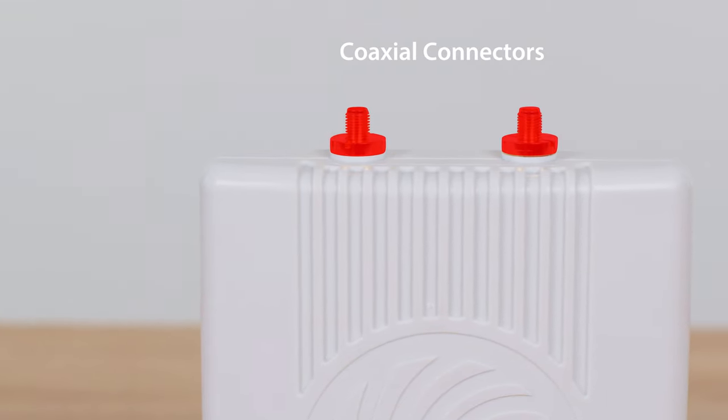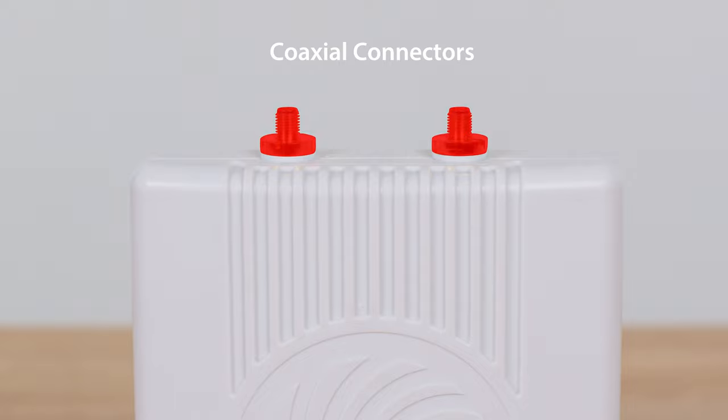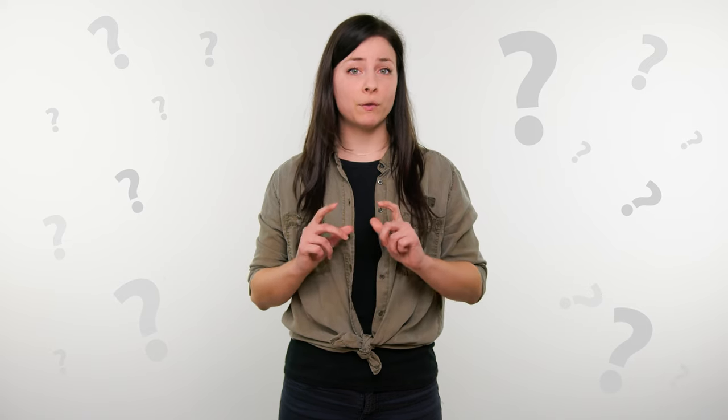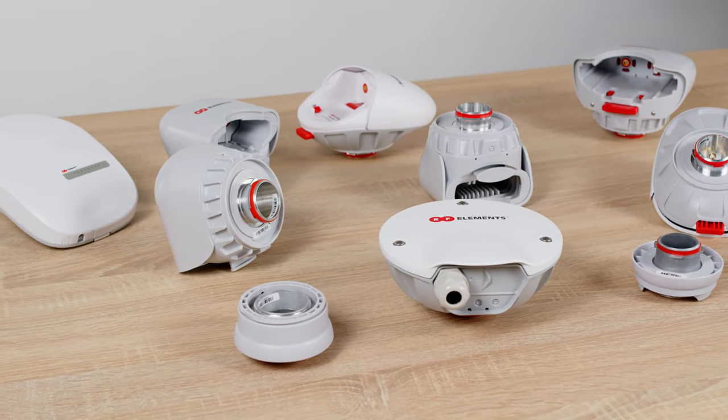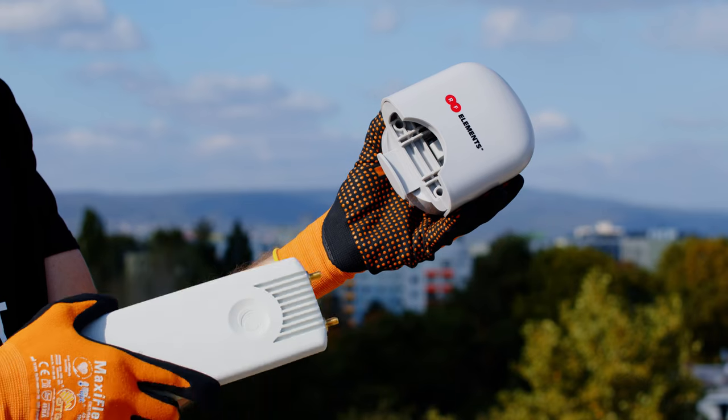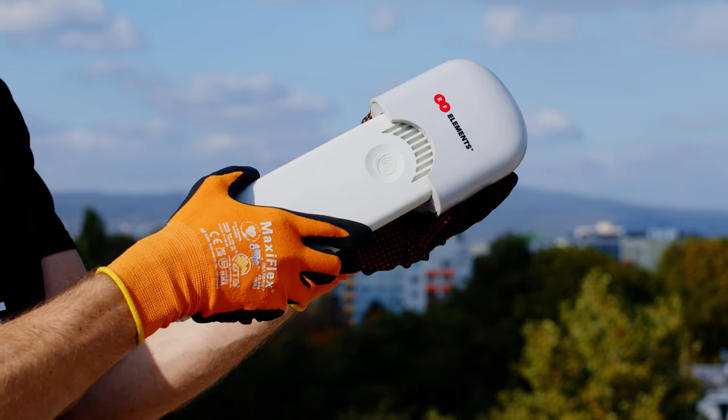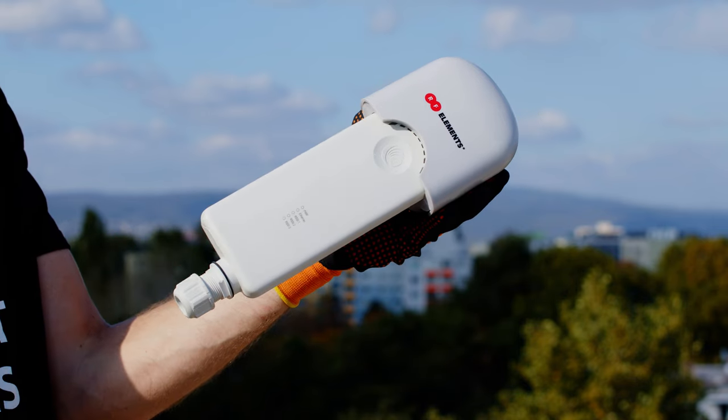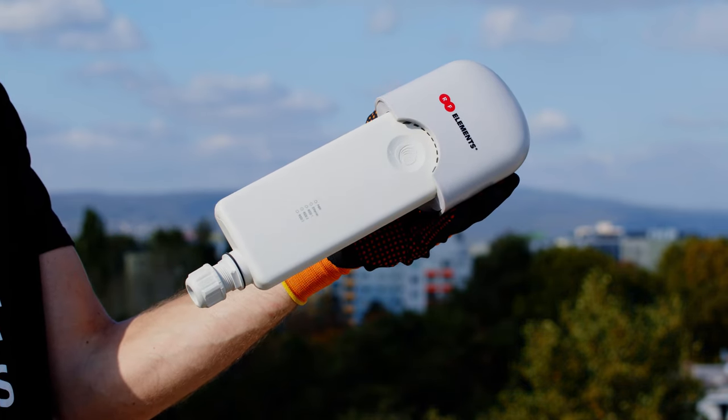Cambium networks radios use coaxial connectors. So the question is, how do you connect radios from Cambium with any of these antennas? The simple answer is you have to use a specific Twistport adapter. A Twistport adapter, or simply TPA, converts the radio interface into a Twistport male connector. If you want to learn more about how TPA works and what's inside the product, check the video here.